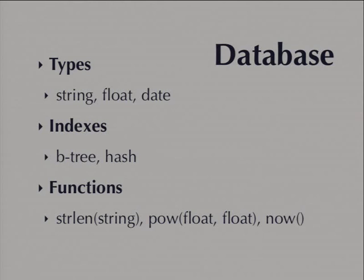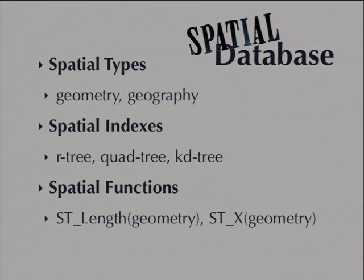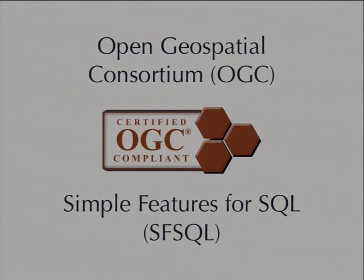A spatial database simply adds spatial to all that. Instead of standard types, or rather in addition to standard types, we have spatial types: geometry, and in some databases, geography. Instead of linear indexes for standard types, we have multidimensional indexes that can handle geometries and geographies: R-trees, quad-trees, KD-trees. And then we have a whole suite of functions that can work against geometries and tell you useful things about them. So, a useful thing to know about a line would be its length. A useful thing to know about a polygon would be its area.